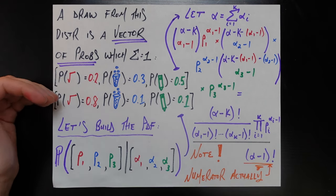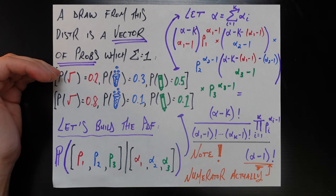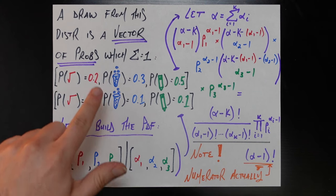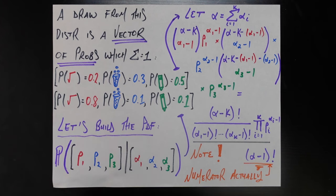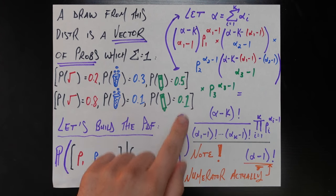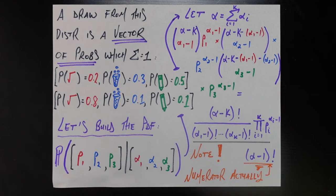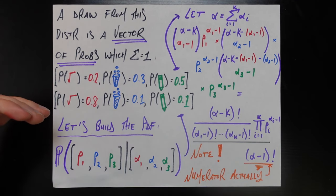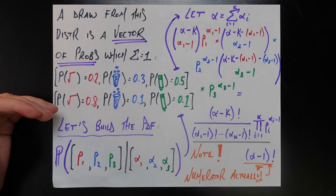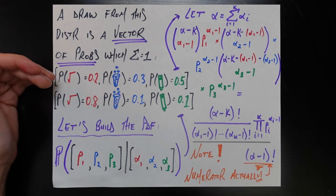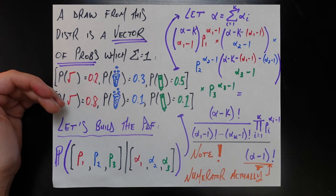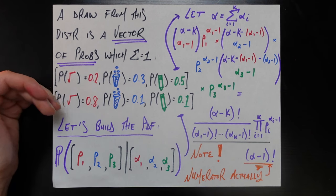So here are two possible draws from our Dirichlet distribution. One could be: probability someone's a math major is 20%, probability someone's a science major is 30%, probability someone's an English major is 50%. Of course, these three numbers add up to one. Here's a different draw: 0.8, 0.1, and 0.1. And the first draw, given the data that we actually have, is more likely than the second draw — and that's what we're going to get to next.